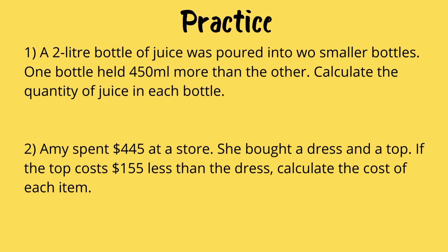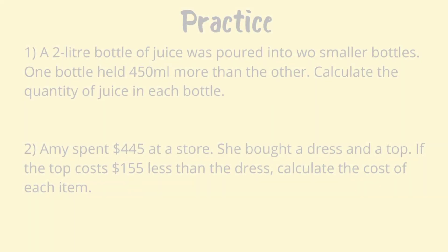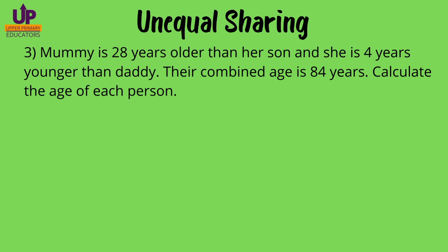Here are two simple problems for you to practice. Now let's move on to a more challenging type of unequal sharing. Mommy is 28 years older than her son and she is four years younger than daddy. Their combined age is 84 years. Calculate the age of each person.